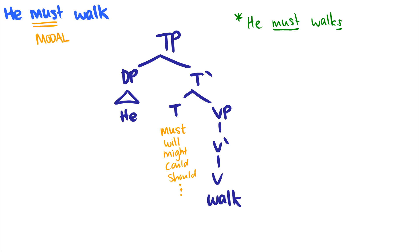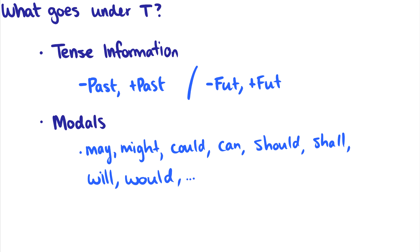So what goes under T? Tense information — and in English it's going to be '-past' or '+past.' Other languages will use '-future' or '+future.' You should never use both, especially in English, because we don't have a future marker; we only have past or minus past. When we want to say future tense, like 'will eat,' we use 'will,' which is a modal auxiliary that we stick in T. The other things that go in T are modals: may, might, could, can, should, shall, will, would.